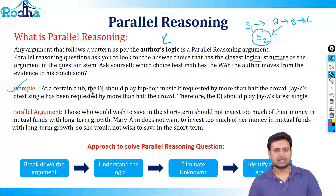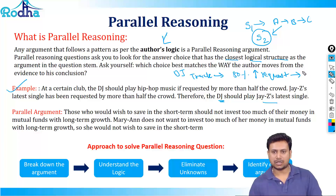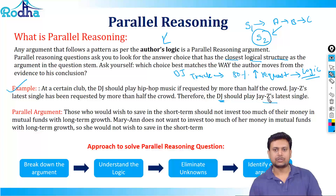Consider this example: at a certain club, the DJ should play hip-hop music if requested by more than half the crowd. Jay-Z's latest single has been requested by more than half the crowd; therefore the DJ should play Jay-Z's latest single. The logic is: the DJ plays a track if more than 50% of people request it. Applying the same parallel logic — since Jay-Z's single was requested by more than half — the DJ should play it.